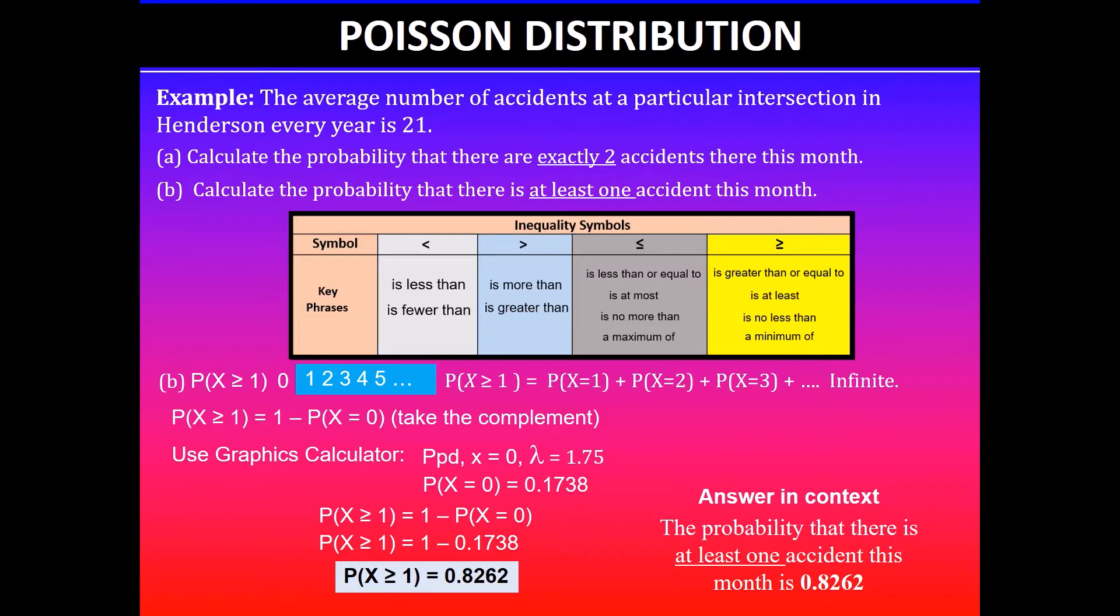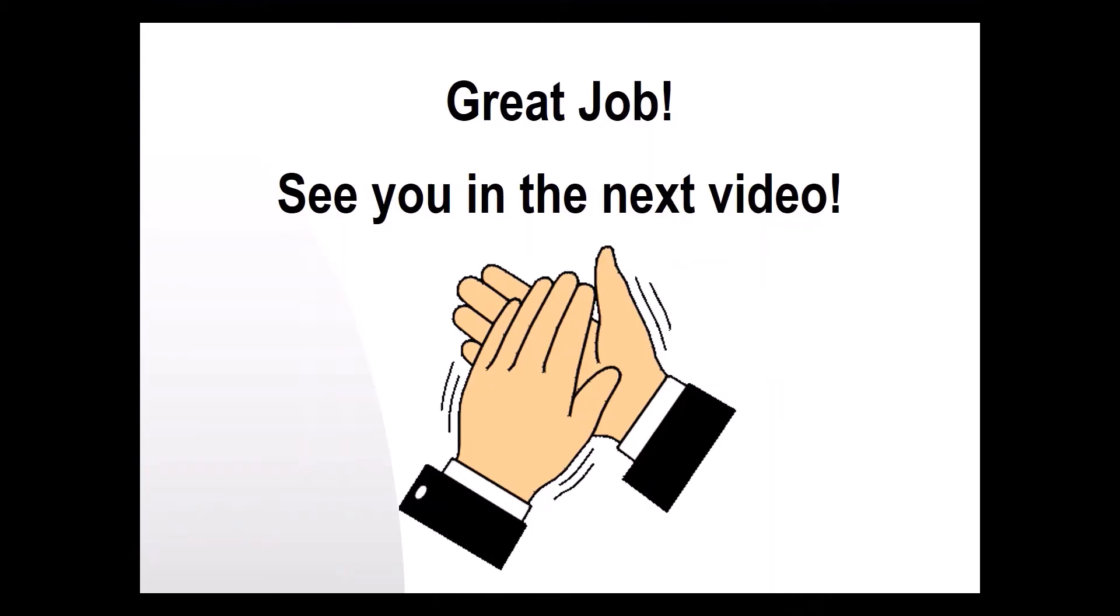So in this case we can say that the probability that there is at least one accident this month is 0.8262. Hope this makes sense. I would suggest you can pause the video and take notes as you go. Thanks for watching, I will see you guys in the next video.